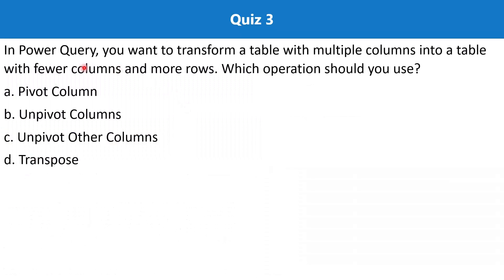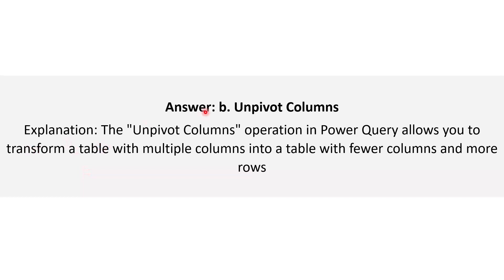Question 3: In Power Query, you want to transform a table with multiple columns into a table with fewer columns and more rows. Which operation should you use? The options are: pivot column, unpivot columns, unpivot other columns, and transpose. The correct answer is option B — unpivot columns. The unpivot columns operation in Power Query transforms a table with multiple columns into a table with fewer columns and more rows, which is exactly what we demonstrated in the previous question.